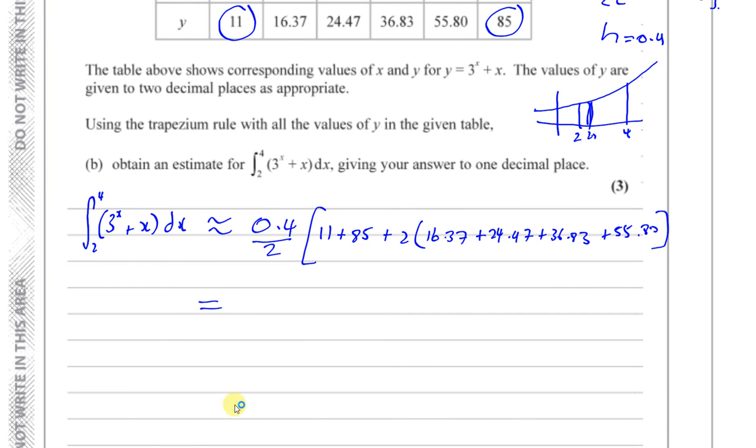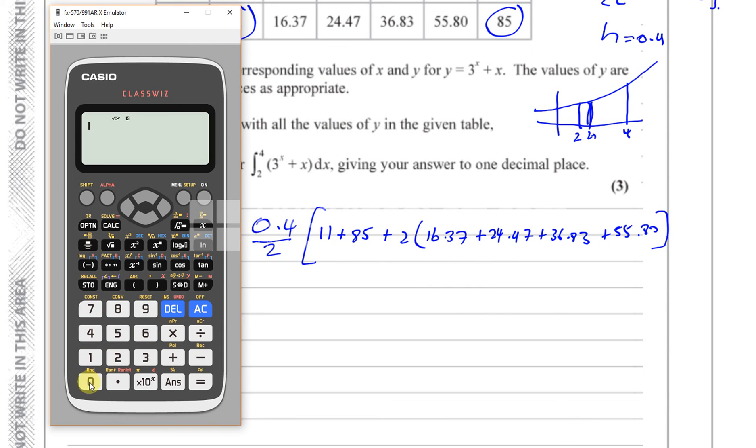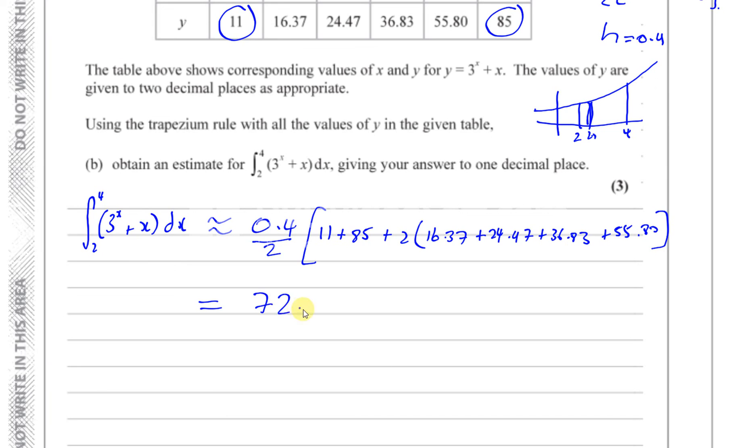So let's see what it gives us. So you have 0.4 divided by 2 times you've got 11 plus 85, the first and the last, plus 2 times, and you've got 16.37 plus 24.47 plus 36.83 plus 55.80 plus that bracket and the other bracket. And we're left with our answer at 72.588, which is 72.6 to one decimal place.